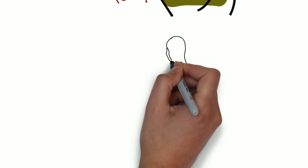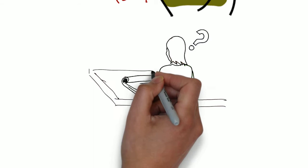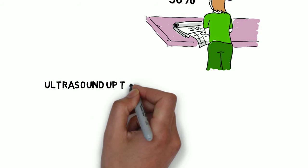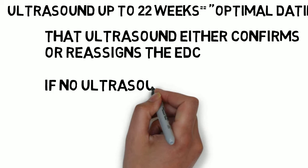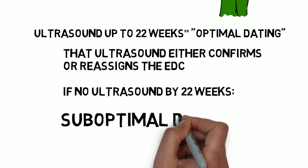Because only 50% of people accurately recall their period, and because one study found that 40% of women had their EDC change based on a first trimester scan, it's been decided that an ultrasound before 22 weeks is required to be considered optimally dated. The decision is a lot more complicated than that, but that's the bottom line. An ultrasound done at less than 22 weeks that either confirms or reassigns the EDC is what it takes.